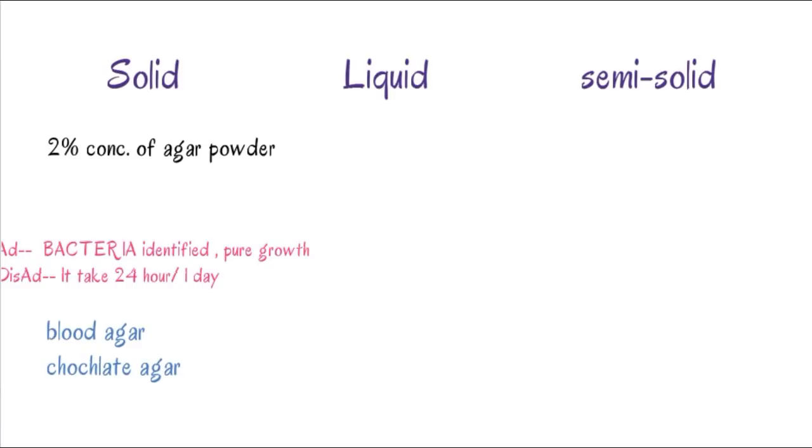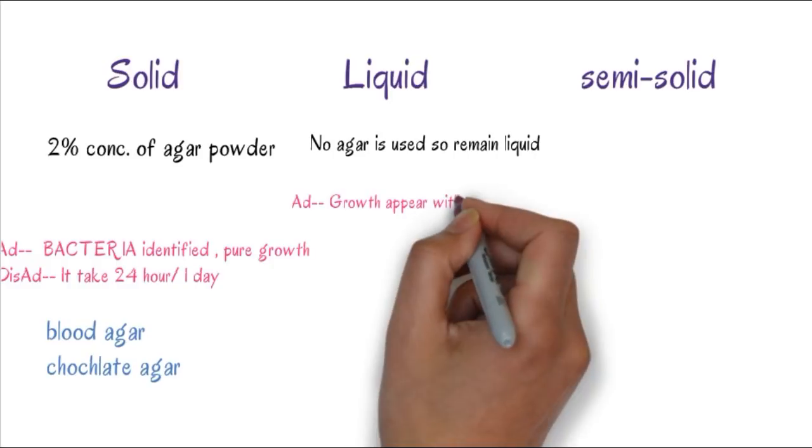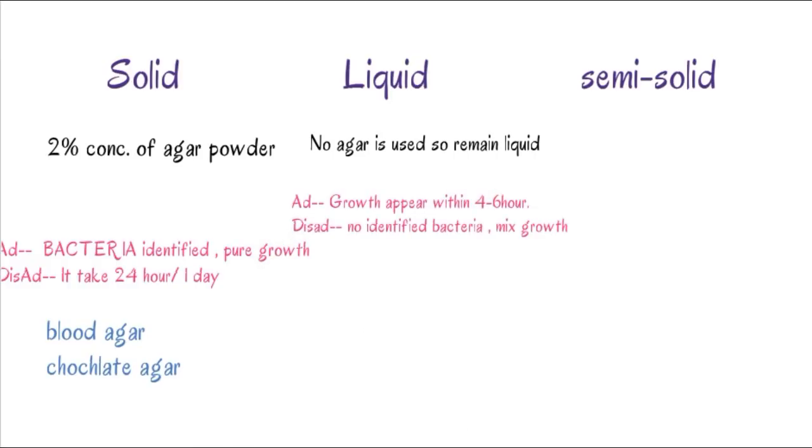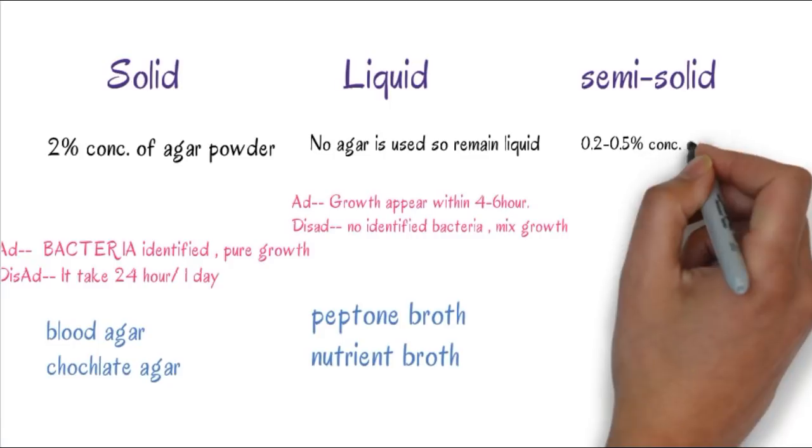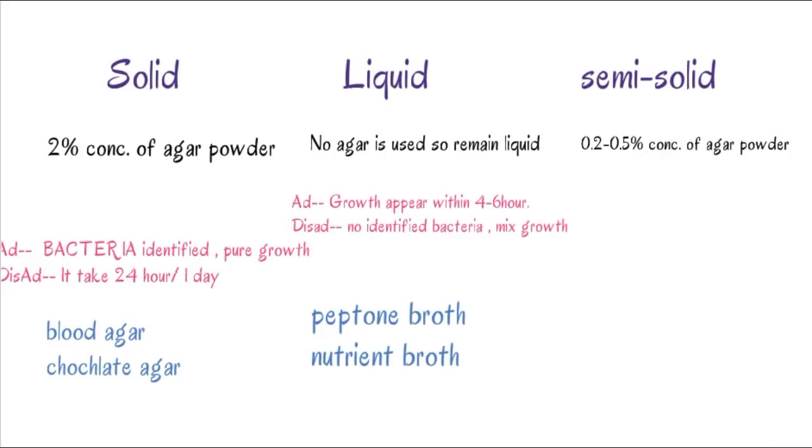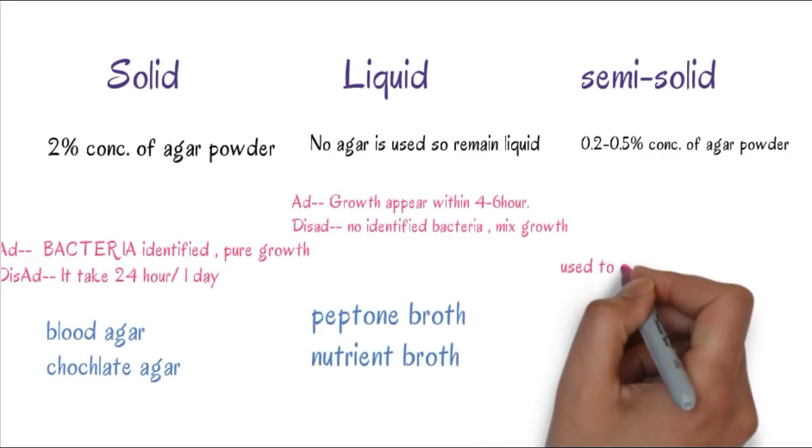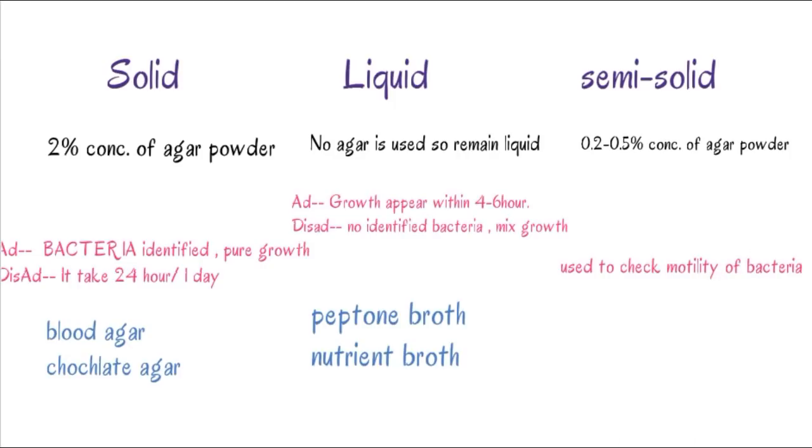In liquid media, we don't add any agar so it remains liquid. Growth appears very fast, 4 to 6 hours. The disadvantage is no identification occurs because we see mixed growth. Liquid media names end with broth or water, such as peptone broth. In semi-solid media we add 0.2 to 0.5% concentration of agar, mainly used to check the motility of bacteria.